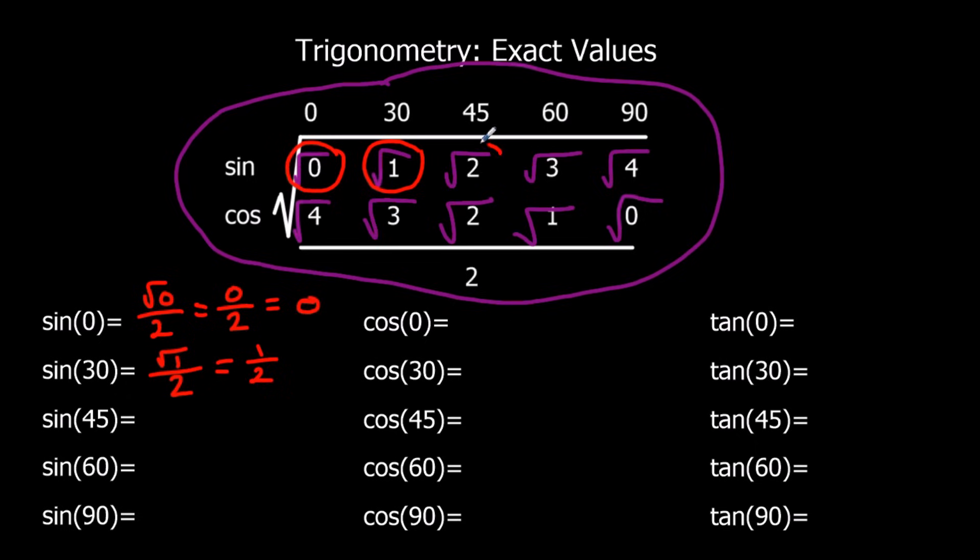Sin 45, where sin meets 45 here, is root 2 over 2. I can't simplify it, so I'm going to leave it as root 2 over 2.